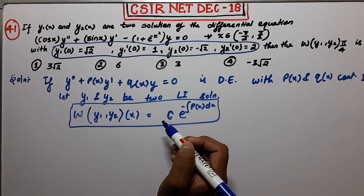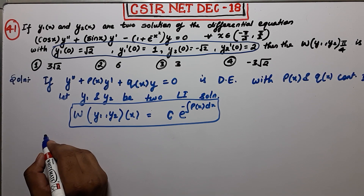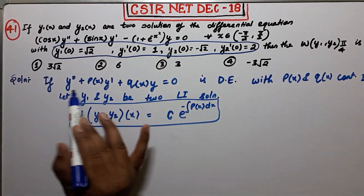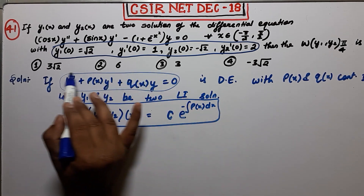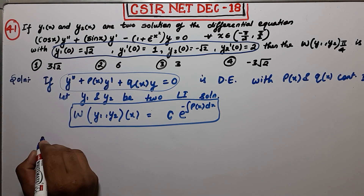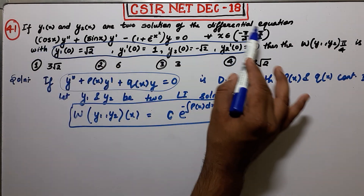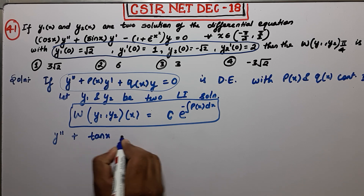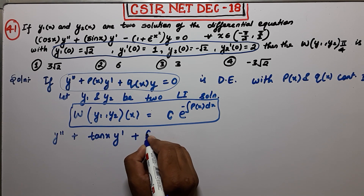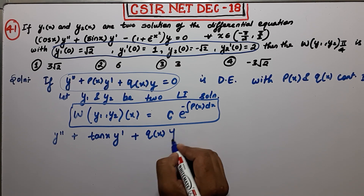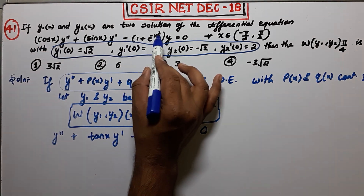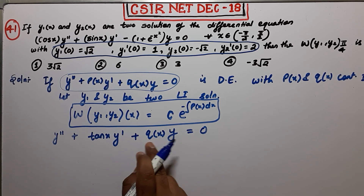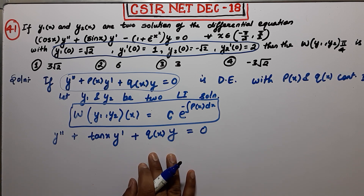By this formula, the question becomes very easy. We need to convert the given equation into standard form. Divide by cos(x) — we can do this because cos(x) is non-zero on this interval. After dividing, we get y'' + tan(x)·y' + q̃(x)·y = 0, where q̃(x) = (1 - e^(-x²))/cos(x). There is no need to evaluate q(x) since the question doesn't require it.